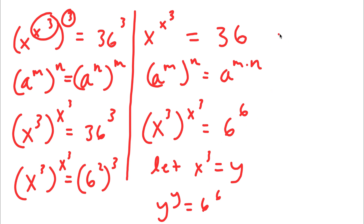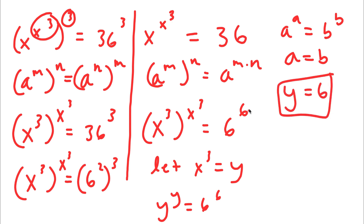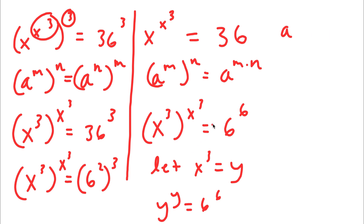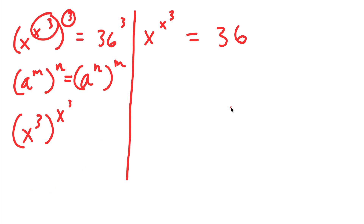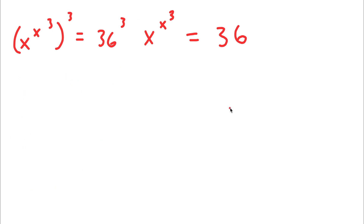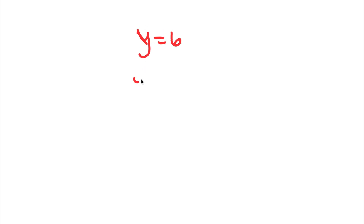If I have something in the form a to the power of a is equal to b to the power of b, this means that a is equal to b. So in this case, y is equal to 6. Since y is also equal to x to the power of 3, I now have x to the power of 3 is equal to 6.